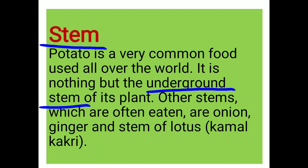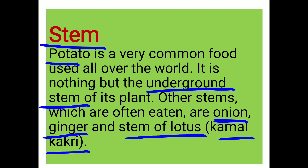Other stems which are eaten by us include onion, ginger, and we also use the stem of lotus, which is called kamal kakadi. That is used to make pickles and vegetables. So the underground stems are potato, onion and ginger. These are the underground stems which are used as vegetables.